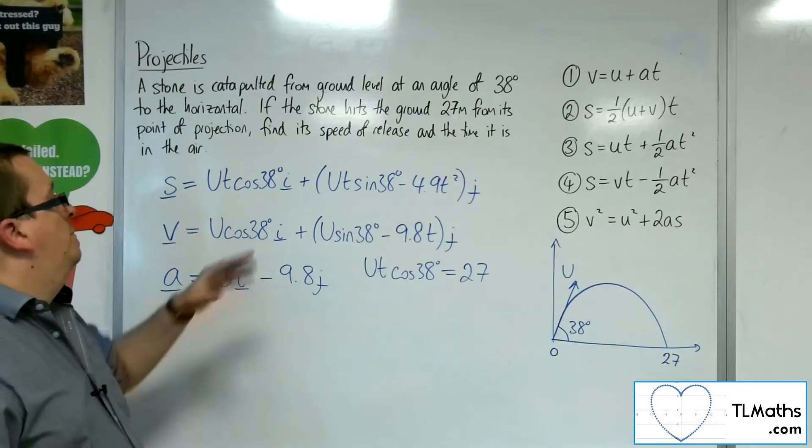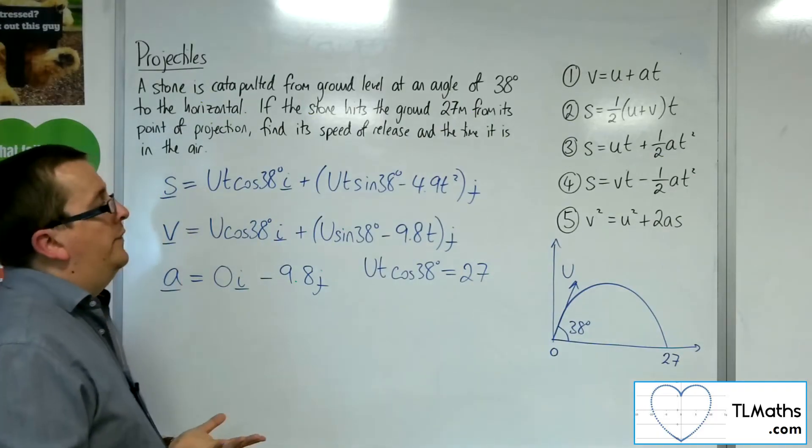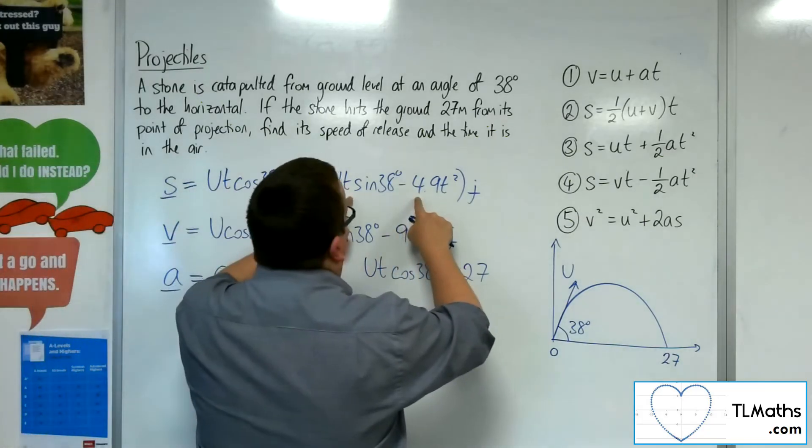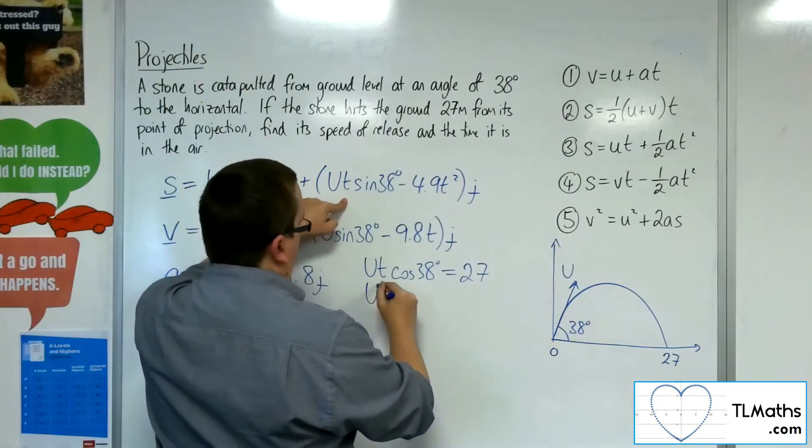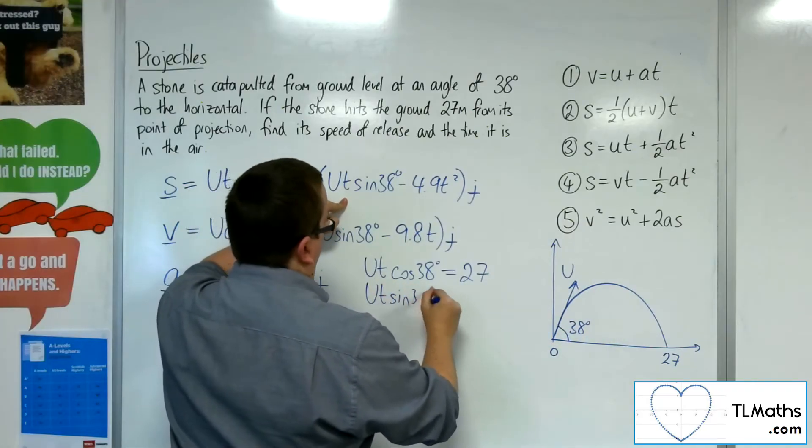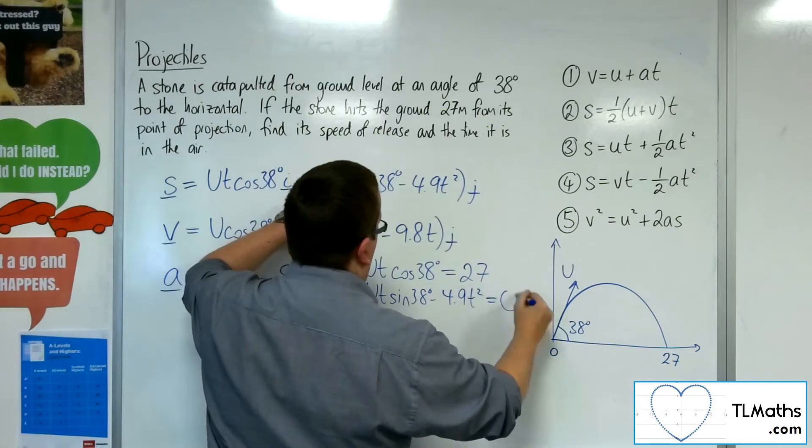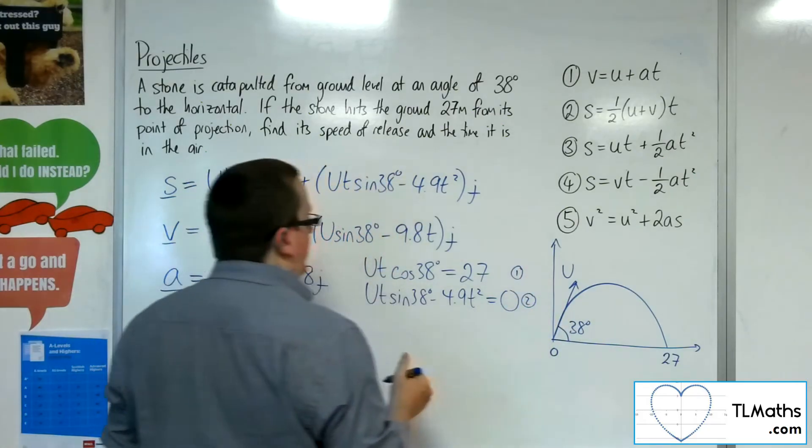So I need the horizontal component displacement to be equal to 27 at this particular time. So I also know that I need the vertical component of the displacement to be 0 at that point because it's hit the ground. And this gives me two equations that I can now work with and solve.